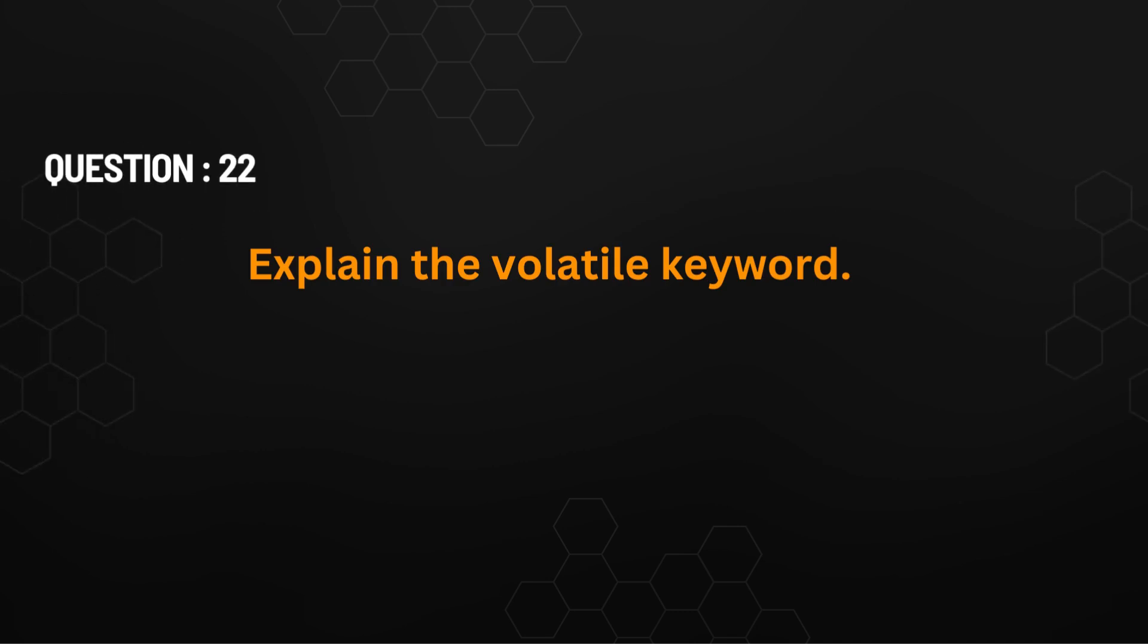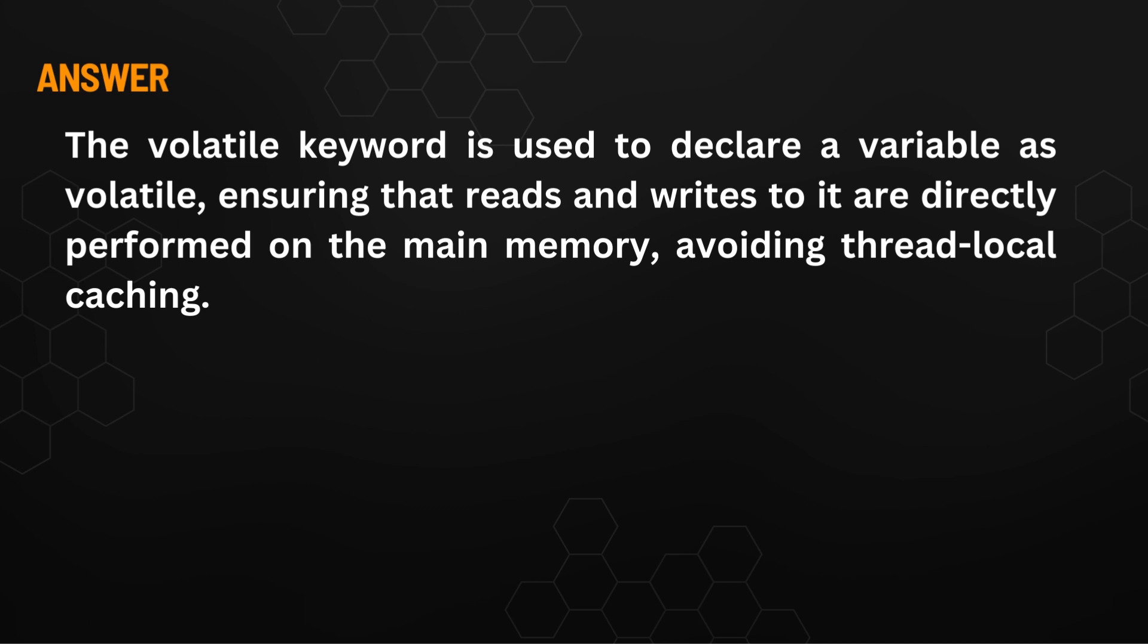Explain the volatile keyword. The volatile keyword is used to declare a variable as volatile, which ensures that reads and writes to it are performed directly from main memory.